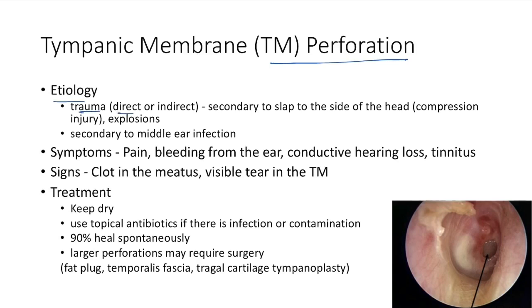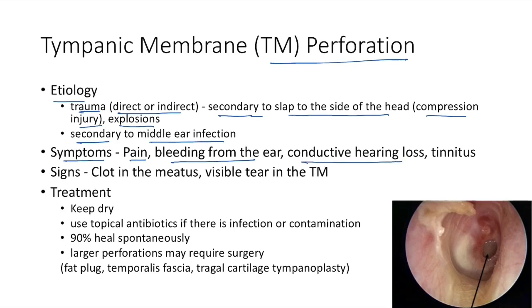Tympanic membrane perforation etiology: trauma, either direct or indirect, usually secondary to a slap to the side of the head, compression injury, or explosions. It can also occur secondary to middle ear infection. Symptoms include pain, bleeding from the ear, conductive hearing loss, and tinnitus.